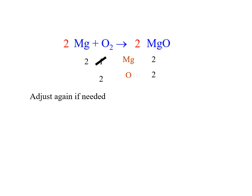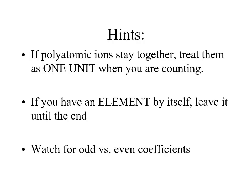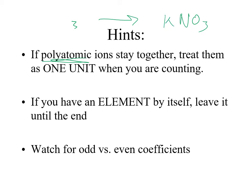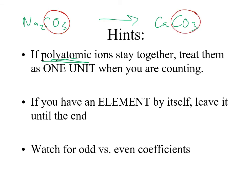If by changing your coefficients you unbalance something, you're going to continually adjust as needed. Some shortcuts can make balancing go a little faster. If you have a polyatomic ion that doesn't get broken up in the reaction, you can treat it as if it's one thing. For example, if you have a carbonate on one side and a carbonate on the other, instead of counting the three oxygens and one carbon separately, you can just say there's one carbonate on each side — balanced.